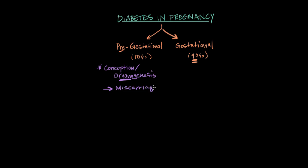With gestational diabetes, the problem with glucose control develops during the pregnancy — in some ways because of the pregnancy. Usually, glucose control isn't impaired until the second trimester, so after the point of conception and after the point of organogenesis. Therefore, miscarriage and fetal anomalies don't tend to be a problem with gestational diabetes.